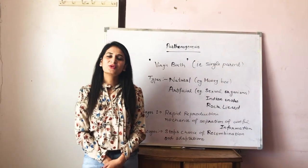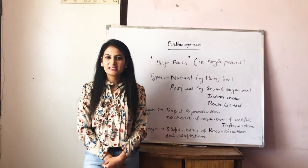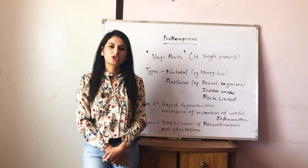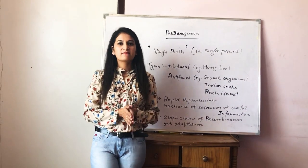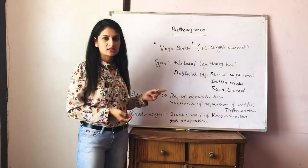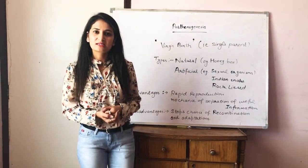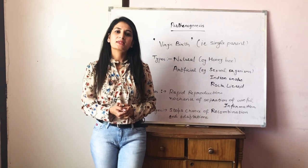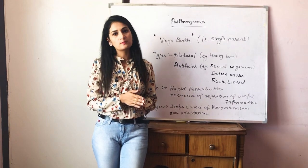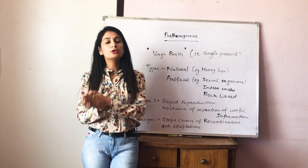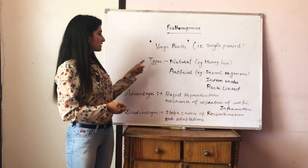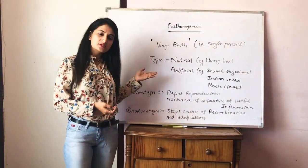Good morning students. In our plus two class, we have to start something new — online education. We have left some topics in the first chapter on sexual reproduction. The last topic of that chapter is parthenogenesis. Parthenogenesis is a virgin birth, meaning there is no two-parent involvement in this process. Only a single parent reproduces or produces a new organism. We have two types: natural parthenogenesis and artificial parthenogenesis.